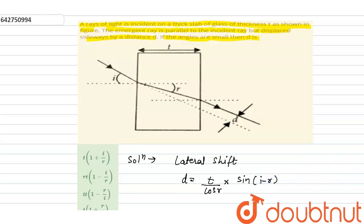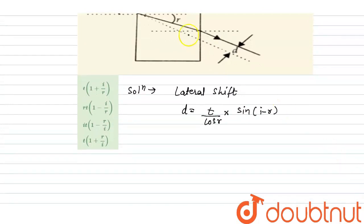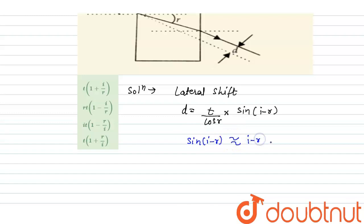So, we know we have been given that the angles are very small. So, sin(i minus r) is approximately equal to (i minus r), and cos r will be equal to 1, because r will be approximately nearly equal to 0, and cos 0 is equal to 1.